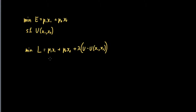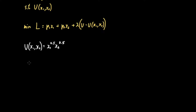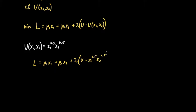We will be using our typical Cobb-Douglas utility function. So our utility function is actually equal to x sub 1 raised to 0.5 times x sub 2 raised to 0.5. Now to solve this, we simply substitute the utility function into our Lagrangian. So L would now be equal to P1·x1 plus P2·x2 plus lambda times open parentheses U minus x sub 1 raised to 0.5 times x sub 2 raised to 0.5 close parentheses.